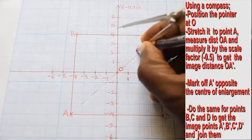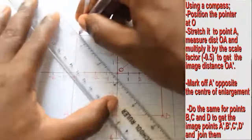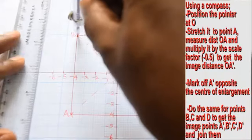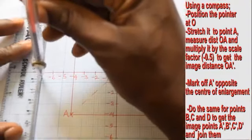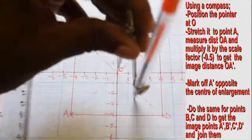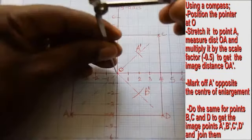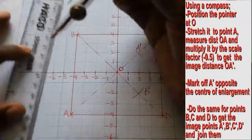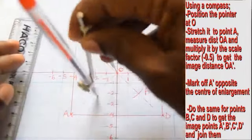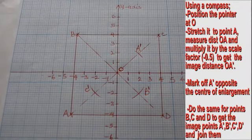Repeat the step for points B, C, and D to get the remaining image points B prime, C prime, and D prime.